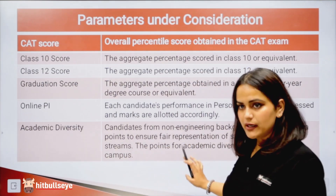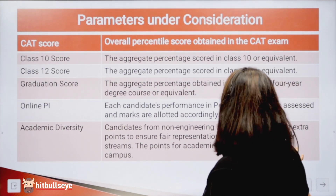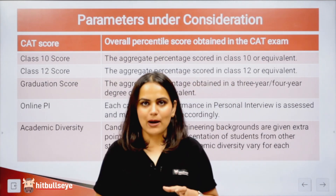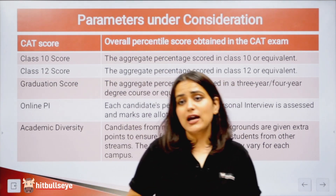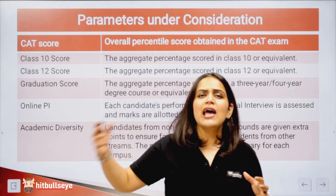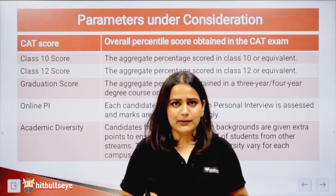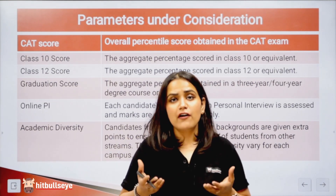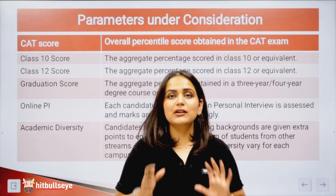Next is academic diversity. Candidates from non-engineering backgrounds are given extra points to ensure fair representation of students from other streams. The points for academic diversity vary for each campus. Many students ask why engineers get seats at top IIMs or why non-engineers are evaluated the same way. The answer is that there is a process where they set a standard to bring all people from different streams and courses to the same level.